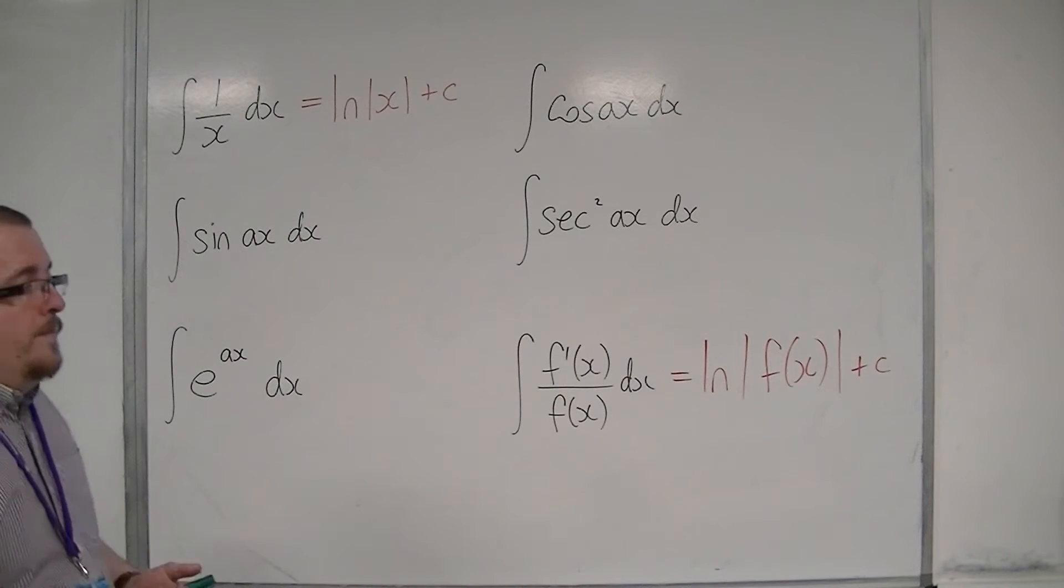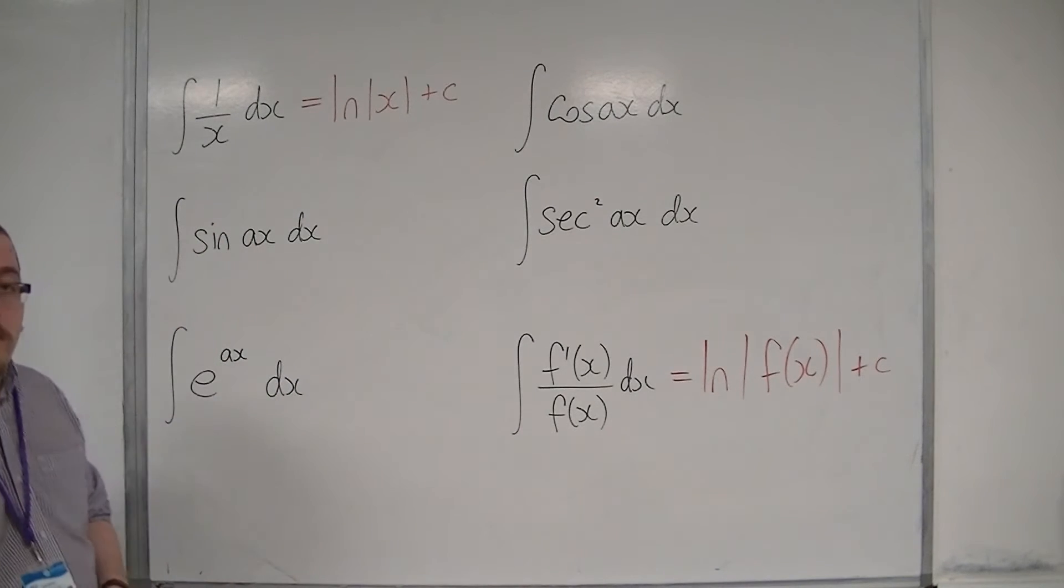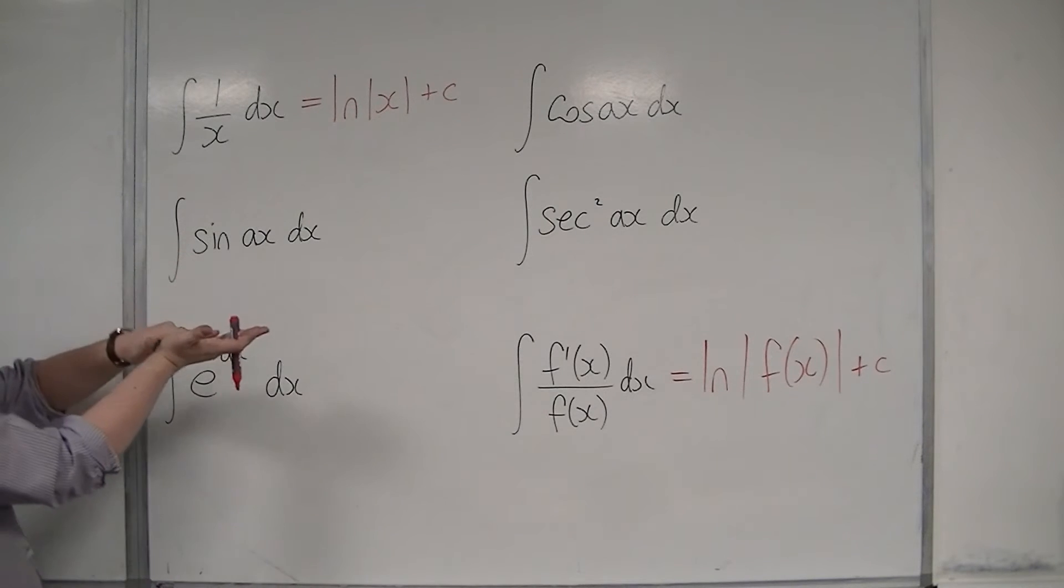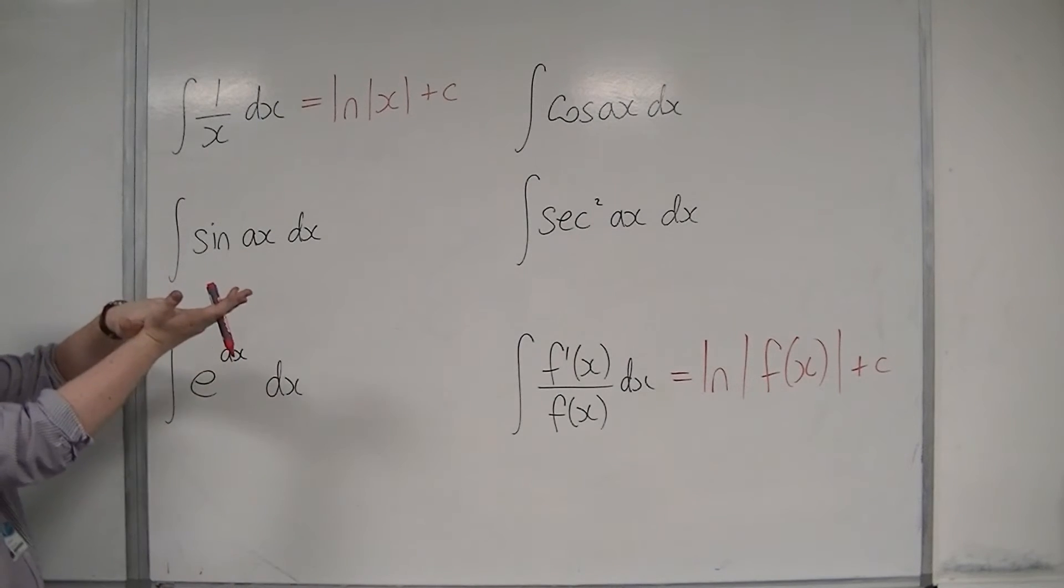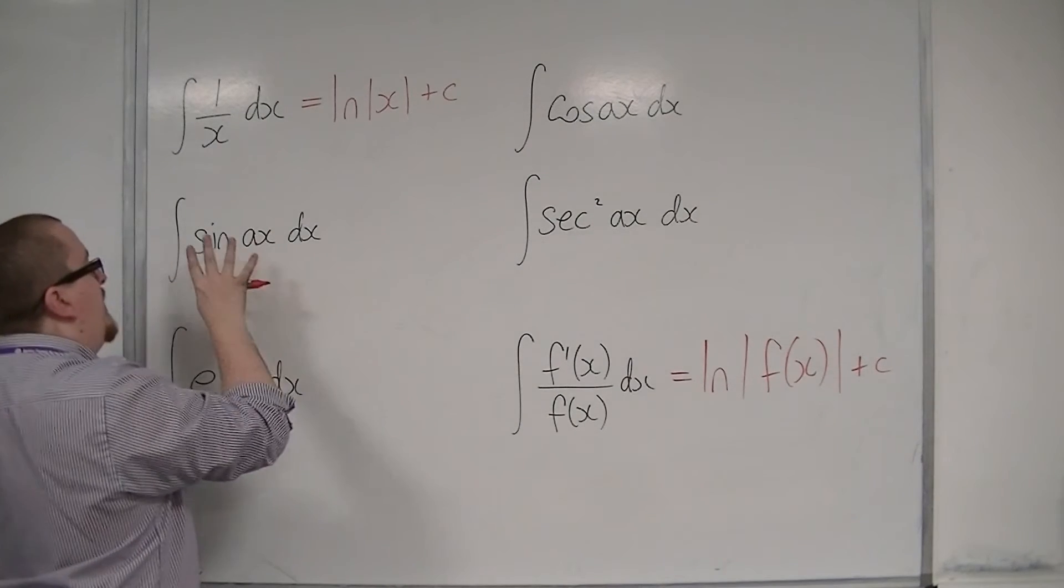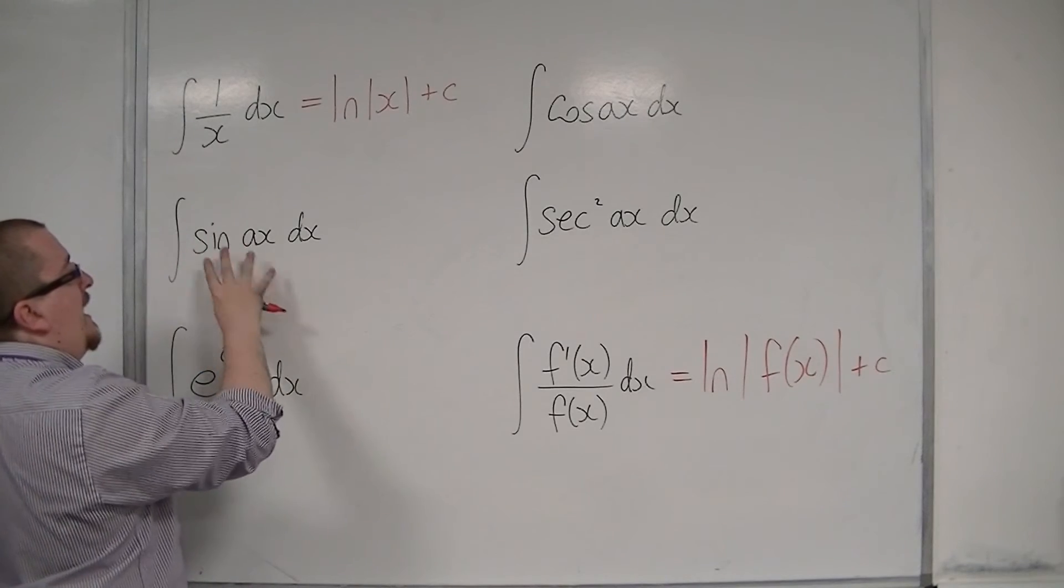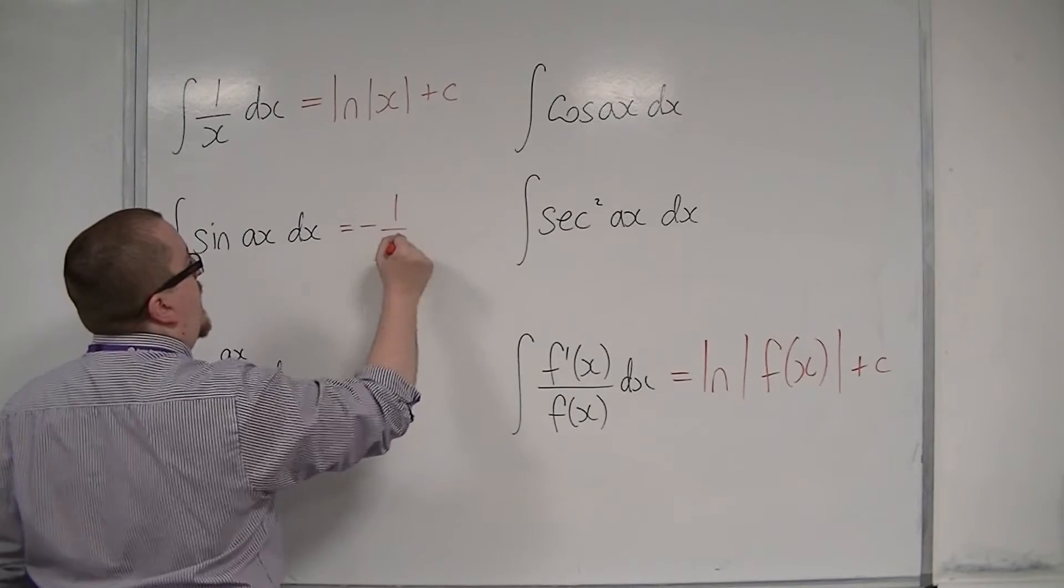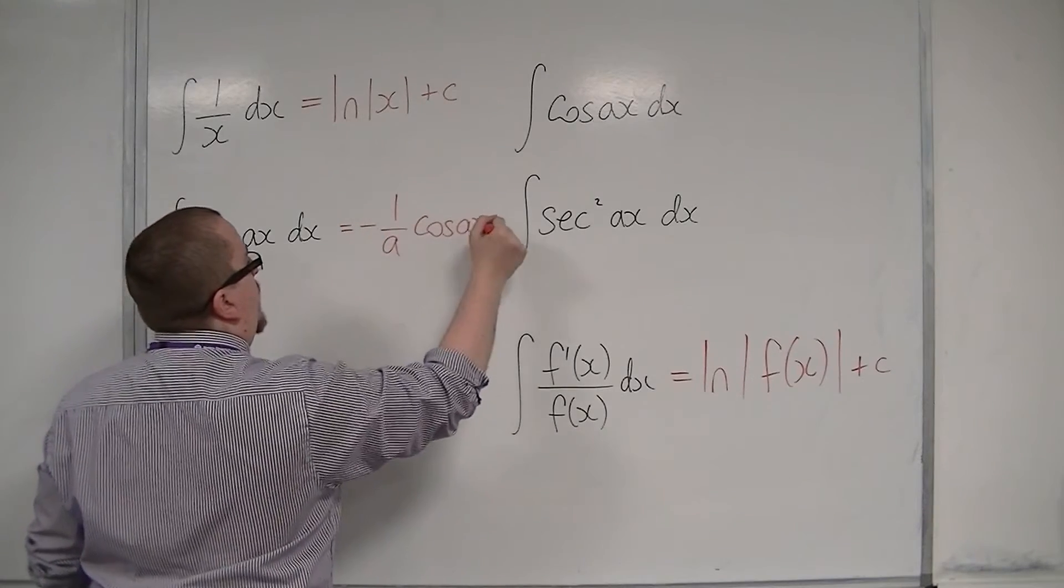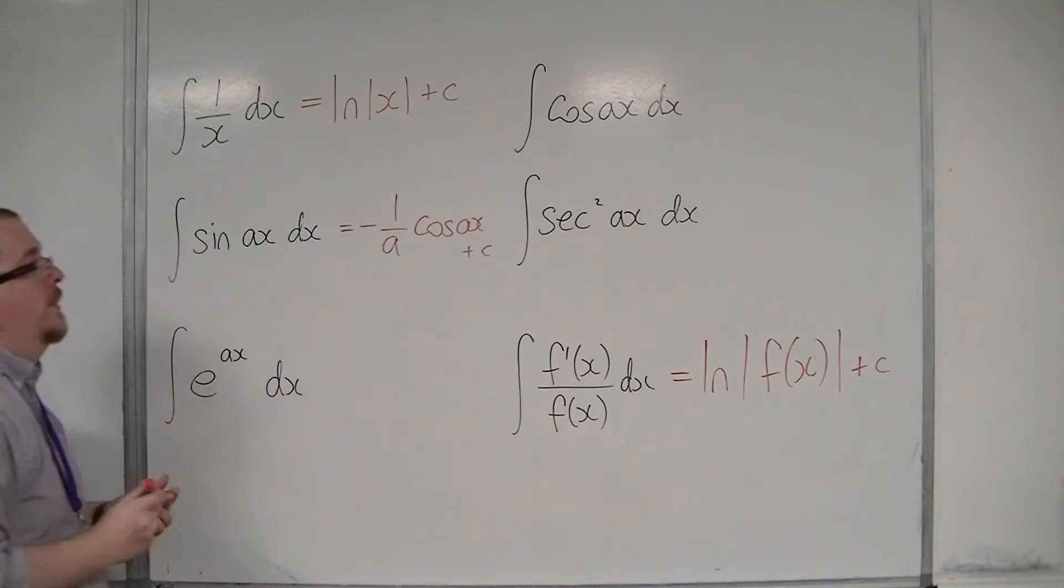Now, we know with trig that sine differentiates to cosine, cosine differentiates to minus sine, minus sine differentiates to minus cosine, and minus cosine differentiates to sine. So if minus cosine differentiates to sine, then sine integrates to minus cosine. So the integral of sin(ax) would need to be -1/a cos(ax) + c.